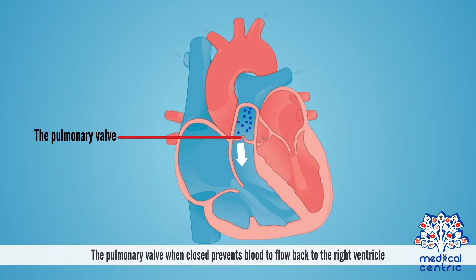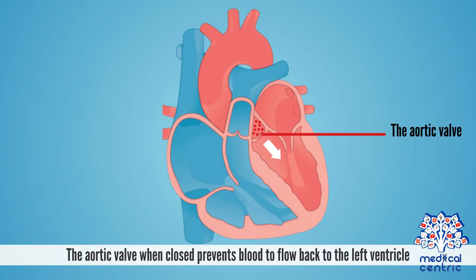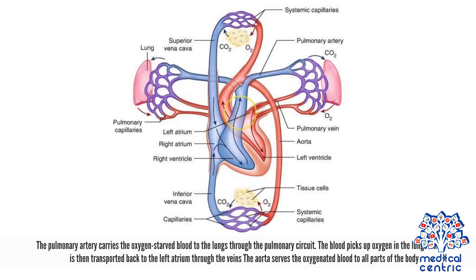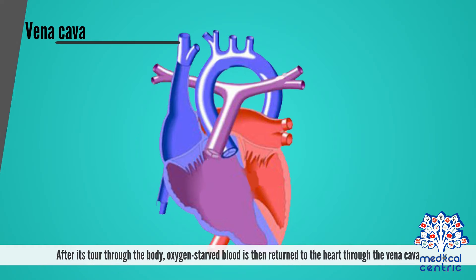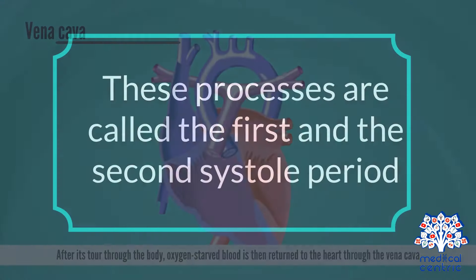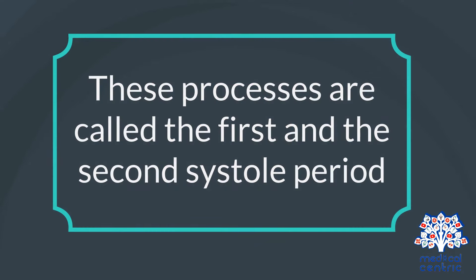The pulmonary valve, when closed, prevents blood from flowing back to the right ventricle. The aortic valve, when closed, prevents blood from flowing back to the left ventricle. The pulmonary artery carries the oxygen-starved blood to the lungs through the pulmonary circuit. The blood picks up oxygen in the lungs, where it is then transported back to the left atrium through the veins. The aorta serves the oxygenated blood to all parts of the body. After passing through the body, oxygen-starved blood is then returned to the heart through the vena cava. These processes are called the first and the second systole period.